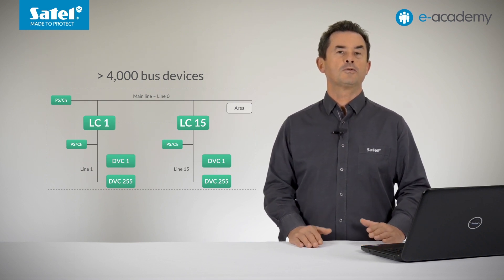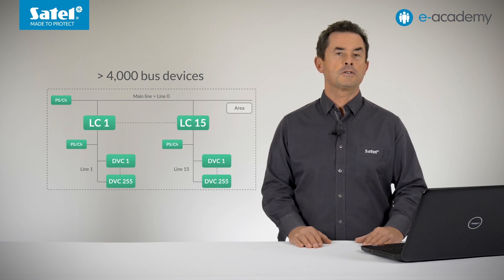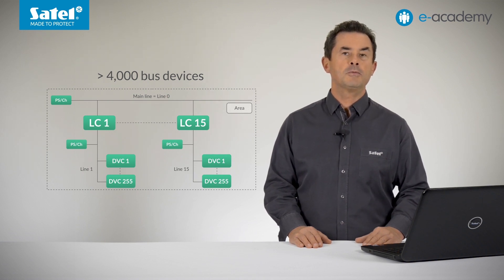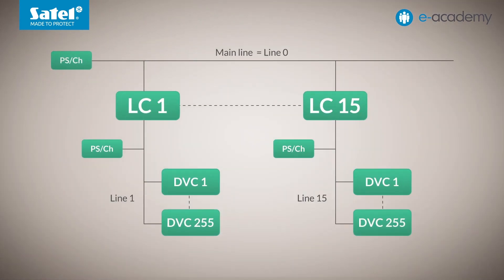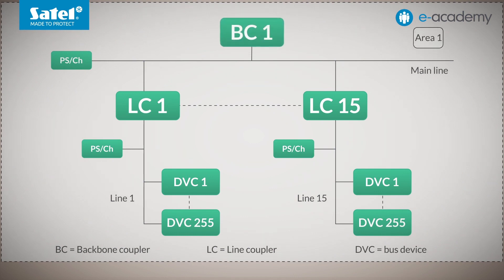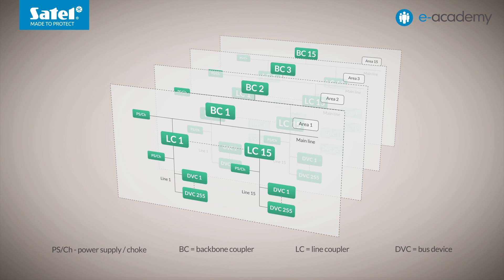What about the situation of very complex KNX installations intended to operate, for example, in a large office building, a public building, or a large hotel? Obviously, it will become necessary to extend the structure. Backbone couplers can be installed on a so-called backbone line, with which up to 15 areas can be connected to it. In addition, up to 256 devices, including couplers, can operate on a backbone line, as on the previously discussed lines. This line also requires its own power supply. As a result, more than 61,000 devices can be installed across the entire KNX-TP network.